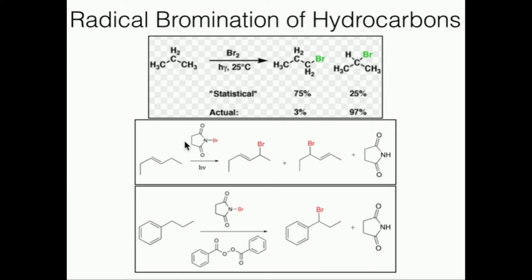To do that, we're going to use this molecule called N-bromosuccinimide or NBS. We can brominate at positions adjacent to the double bond, as shown in this product right here. We would brominate at a position adjacent to that double bond, not part of it.